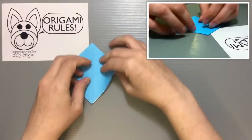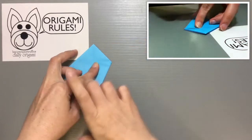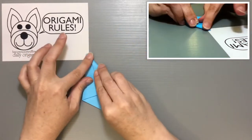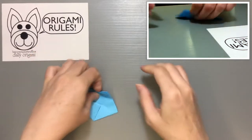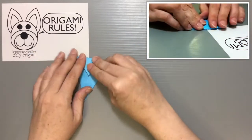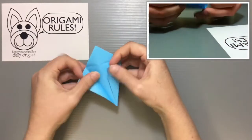Flip it over and do the same thing on the back. Then I'm going to go ahead and take the top part and fold it down to make a good crease both here at the top. Open everything up.